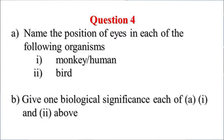Question 4: name the position of eyes in each of the following organisms — A(i) monkey or human, A(ii) bird. Then part B: give one biological significance each of A(i) and A(ii) above.